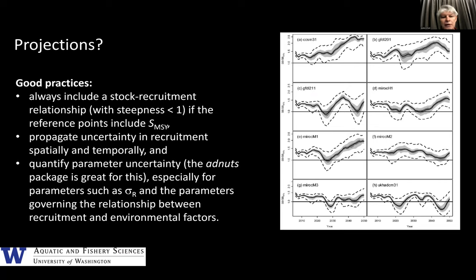On projections: as I've already mentioned, if you're going to do projections you need to have a stock-recruit relationship. It does not make sense to do projections based on constant recruitment, because why would you care about biomass if it doesn't affect recruitment? We should be propagating as much uncertainty as possible. I'd also highlight the adnuts package now available for Stock Synthesis — I've used it and it's been pretty successful at estimating parameters like sigma-R and also parameters relating recruitment to environmental factors. On the right I show projections of spawning biomass for cod in the North Pacific under different climate models, highlighting that expected recruitment could depend on factors outside our control.